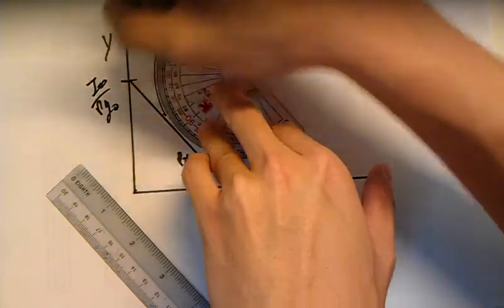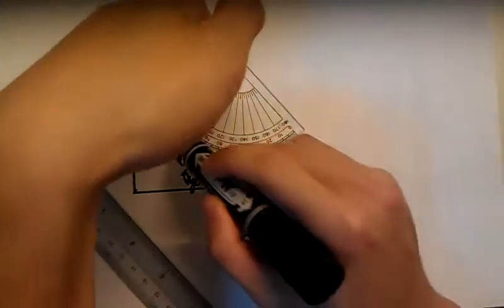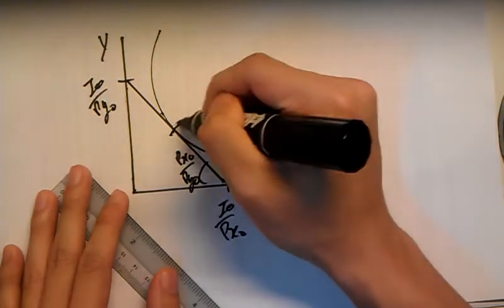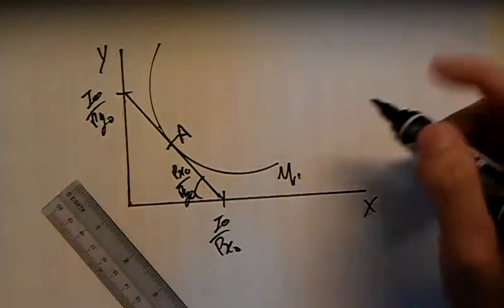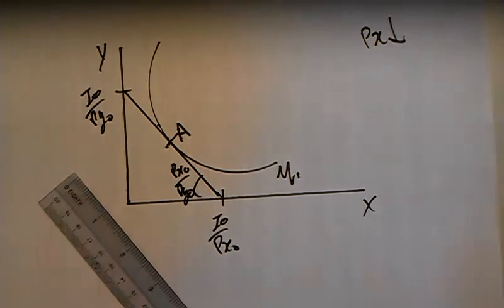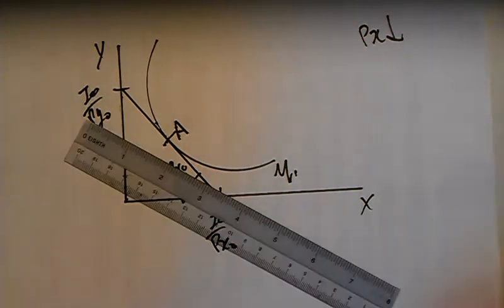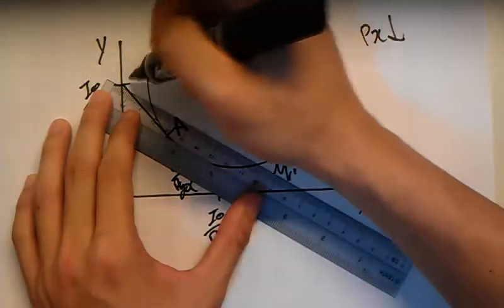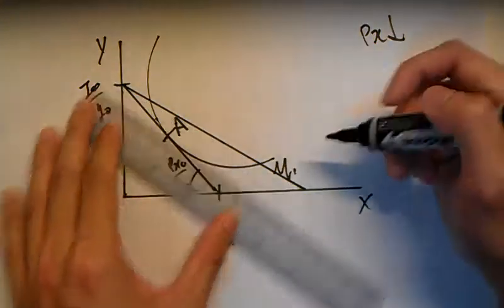Draw the indifference curve at point A. First step: decrease the price of X. This is going to shift my budget constraint outwards because I have a higher income in terms of X.